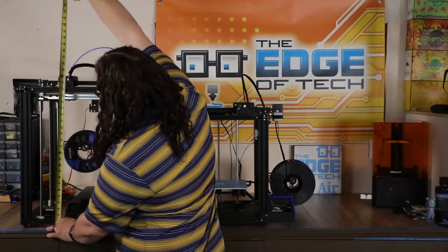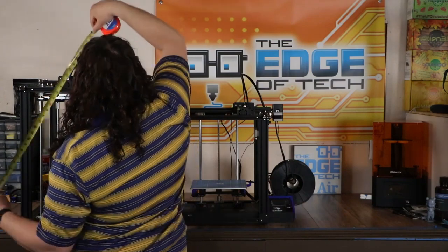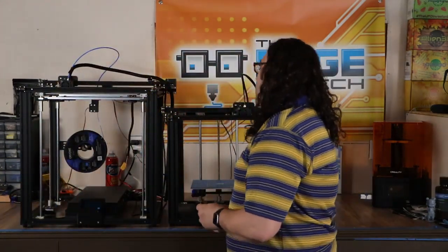If we look at the Ender 5 Plus, you're probably going to need around 30 inches to give that Bowden tube some good clearance there if you're going to put it on a shelf or something. So it's definitely taller, it's a bigger machine.